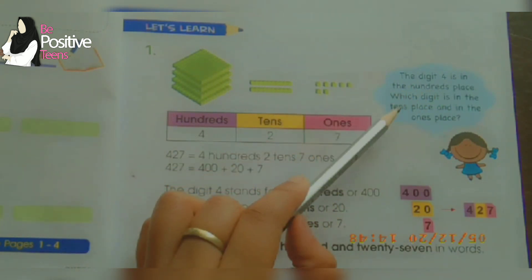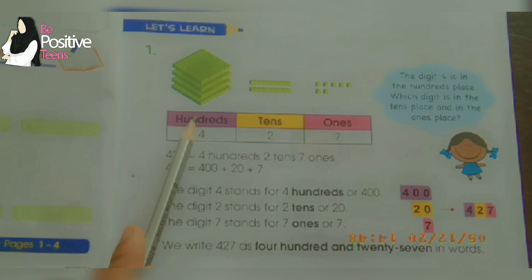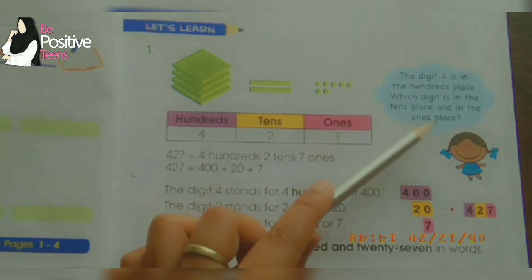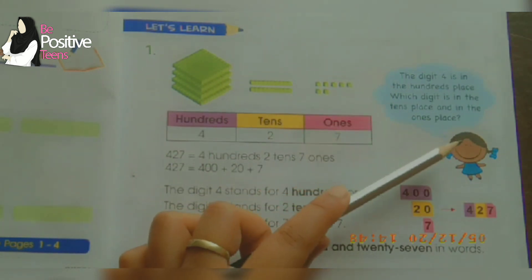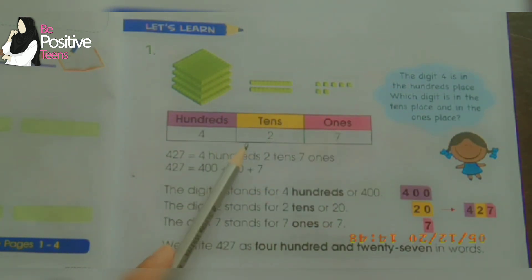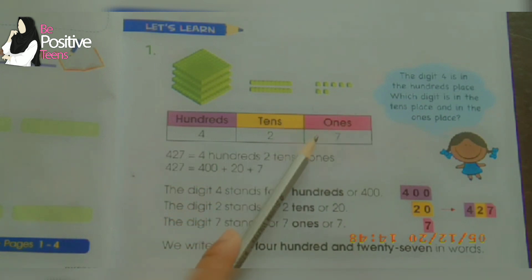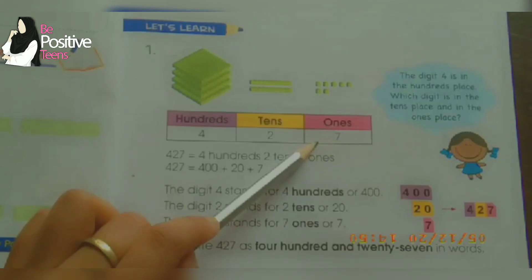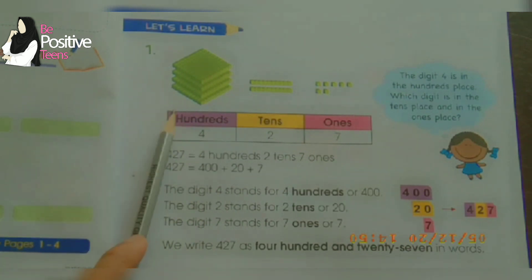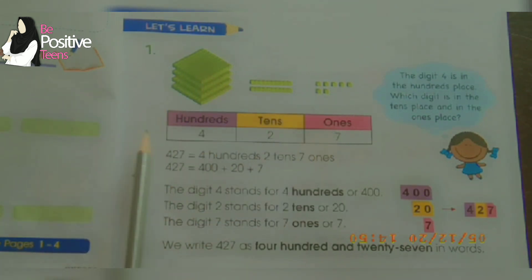The digit four is in the hundreds place. Which digit is in the tens place? The tens place has the digit two. And in the ones place, the ones place has seven. So hundreds is four, tens is two, and ones is seven.